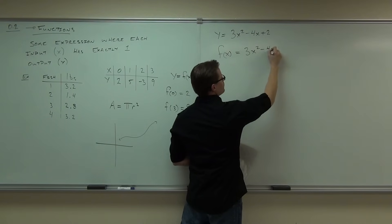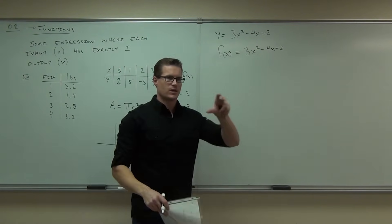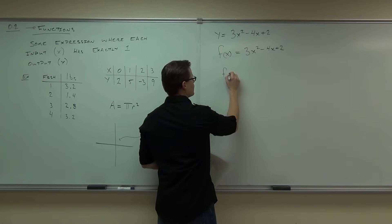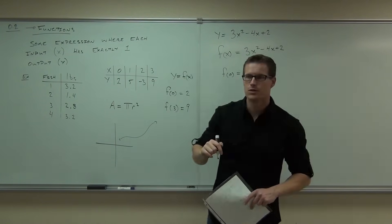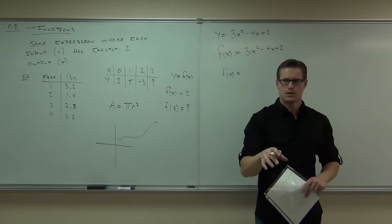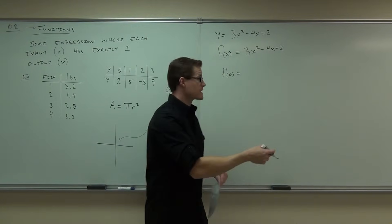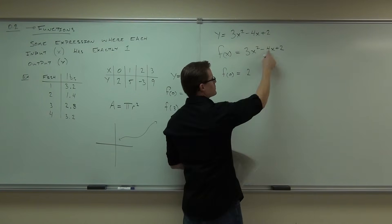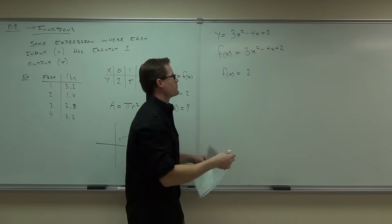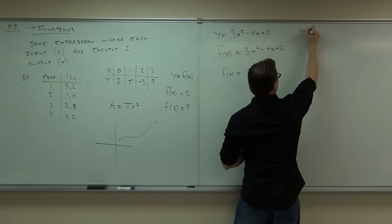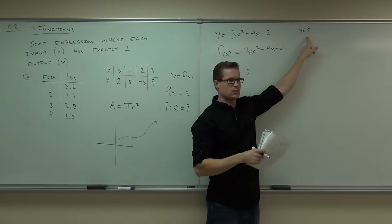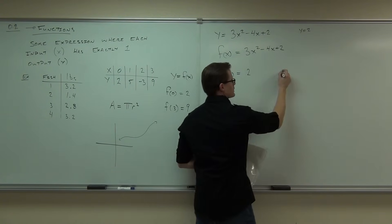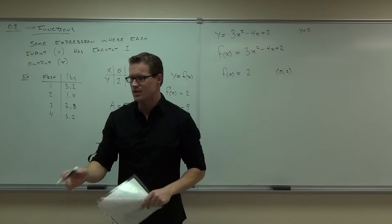Function notation also tells you what you plugged in. If I ask for f(0), you plug in 0 and find the output is 2. With y = something, you know the output is 2, but you don't know what you plugged in. With f(0) = 2, you get a coordinate point: you plugged in 0, you got out 2. That's one more reason we use function notation.